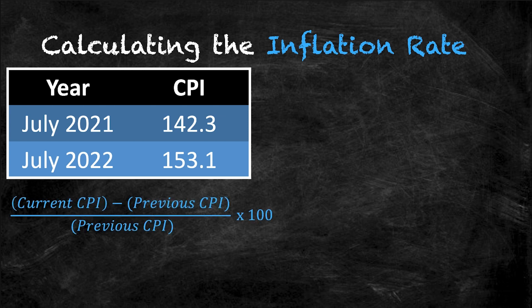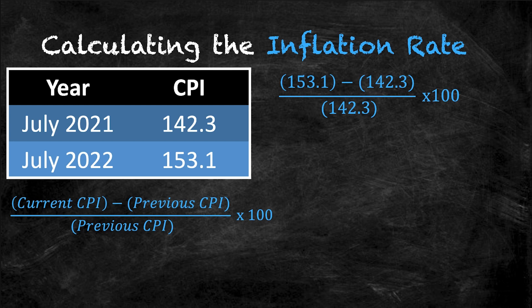So the correct calculation of the inflation rate for 2022 is the CPI in July of 2022 — so 153.1 — minus the CPI from July of 2021, which is 142.3. All of this is divided by the CPI from July of 2021, which is 142.3. Since this is a percentage, we have to multiply our result by 100 to get a 12-month inflation rate.